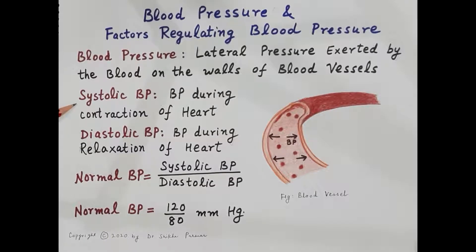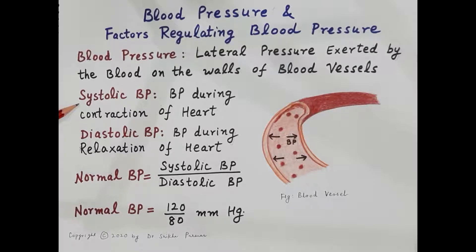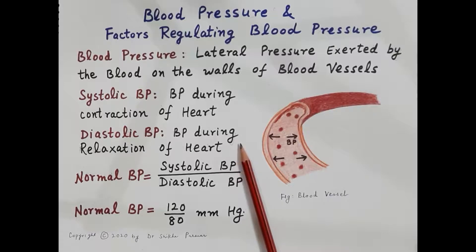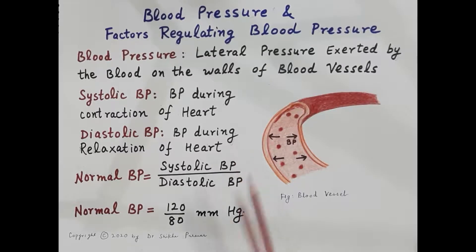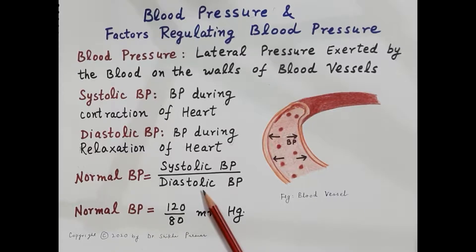Systole means contraction, so blood pressure during contraction of the heart is systolic blood pressure. When the heart contracts, it pumps blood forcefully into the aorta and all other arteries. The pressure produced within the arterial system during contraction is high and is called systolic blood pressure — about 120 mmHg in a normal adult. During complete cardiac diastole both atria and ventricles relax, so blood pressure in the arterial system is comparatively less; this is diastolic blood pressure, about 80 mmHg. Normal blood pressure is therefore expressed as 120/80 mmHg.